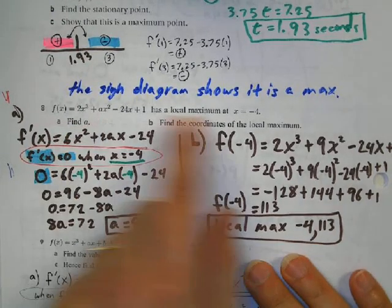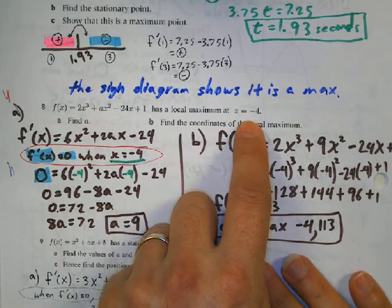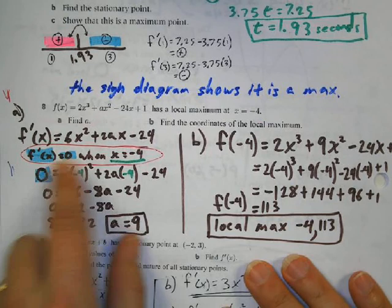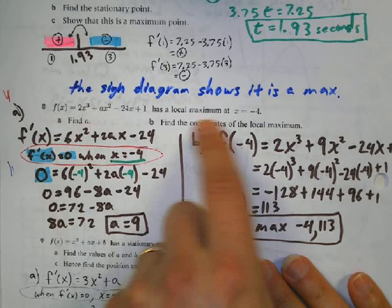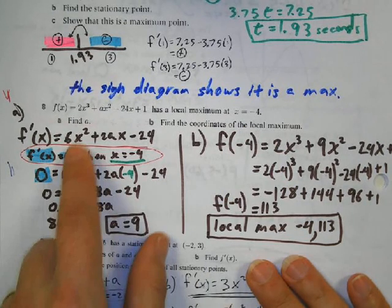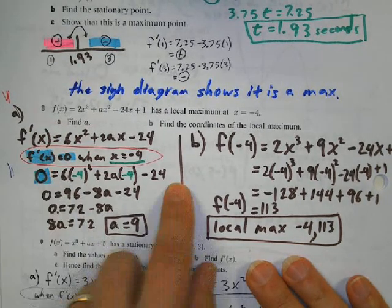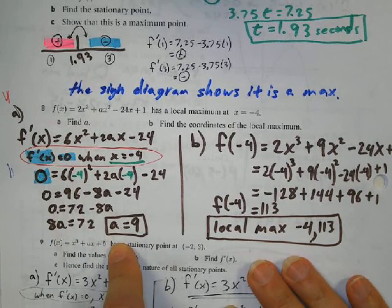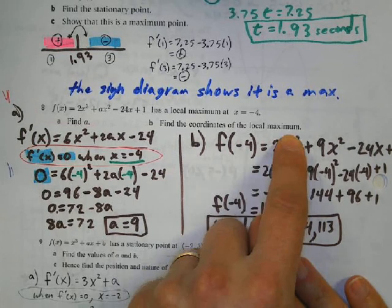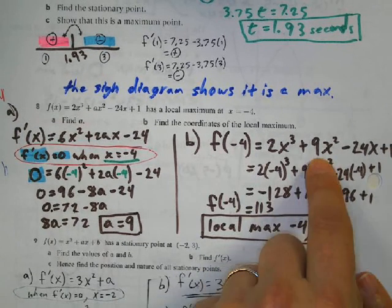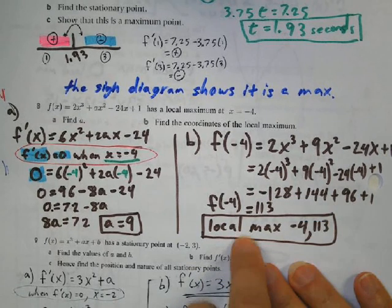This one's tricky: we've got a function with unknown a and we know there's a local maximum at x equals negative 4. Take the derivative. We know the derivative equals 0 at the stationary point, so replace x with negative 4 and f prime with 0, then solve for a — we get a equals 9. Now replace a with 9 in the original function, plug in x equals negative 4, and find the local maximum coordinates are (negative 4, 113).